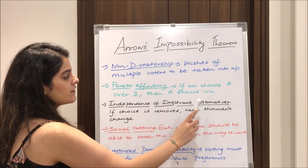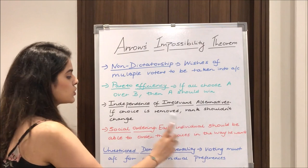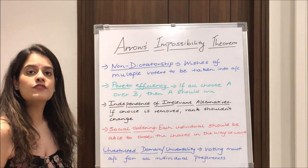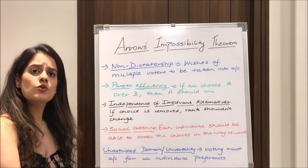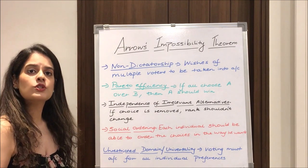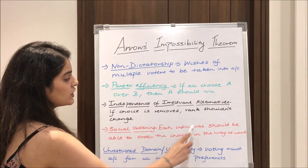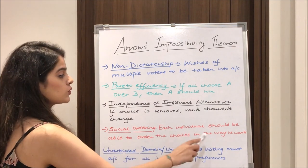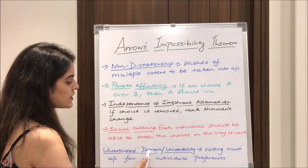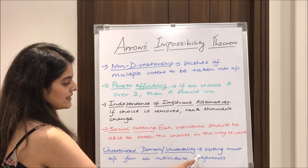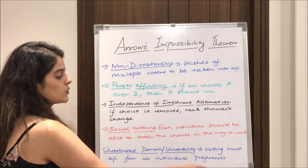Independence of irrelevant alternatives means that if a choice is removed, the ranking between remaining choices shouldn't change. For example, if we choose A when A, B, and C are present, and C is removed, we should still choose A over B. Social ordering means each individual should be able to order the choices as they prefer. And lastly, unrestricted domain or universality means voting must account for all individual preferences.